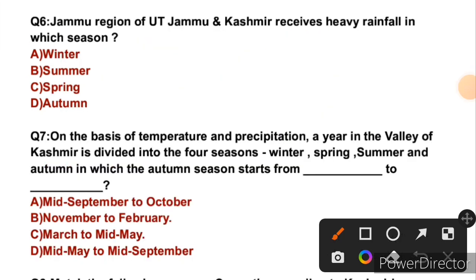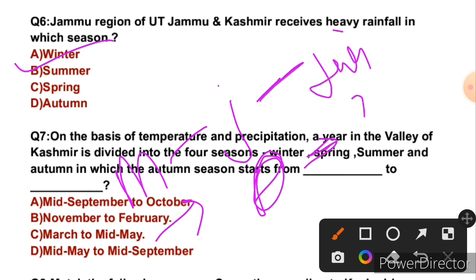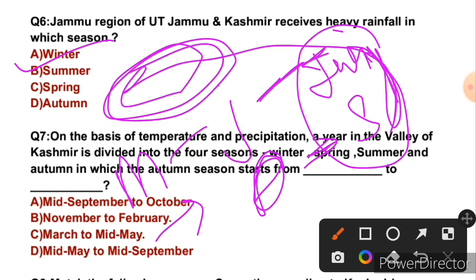Question 6: The Jammu region of UT Jammu and Kashmir receives heavy rainfall in which season? Jammu region and Jammu Plains receive the most rainfall during the monsoon season. The monsoon enters India in June and retreats by September–October. For Jammu Plains specifically, the monsoon enters in July and retreats by September. So those are the months of maximum rainfall in the Jammu region.